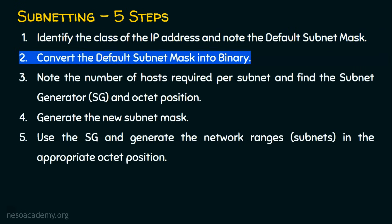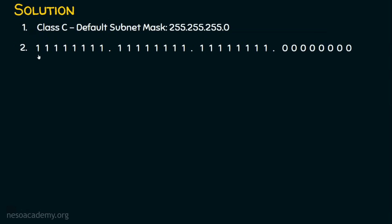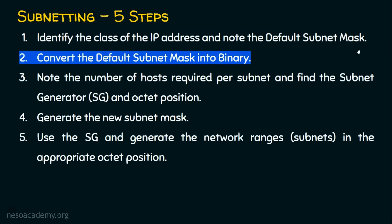Step two: convert the default subnet mask into its binary equivalent. The default subnet mask is 255.255.255.0. Converting to binary gives four octets: all ones in the first, second, and third octets, and all zeros in the fourth octet, because 255 in binary is all ones. Step two is done.